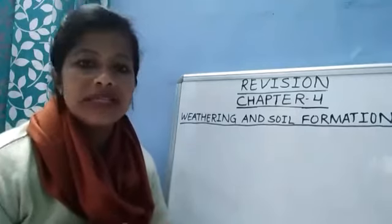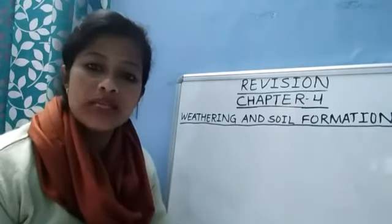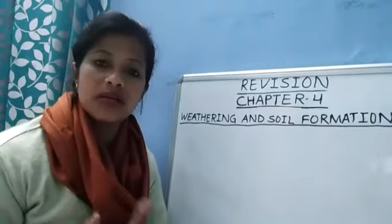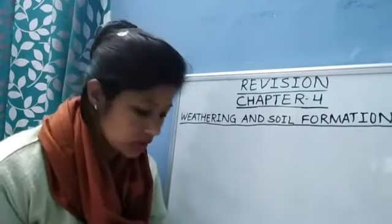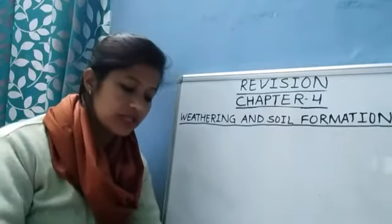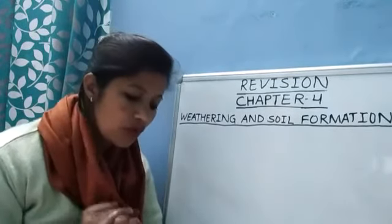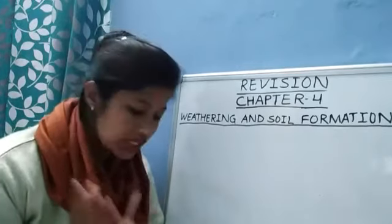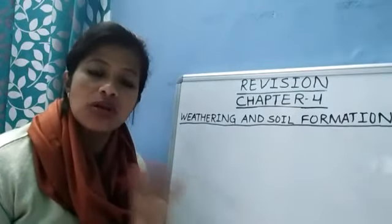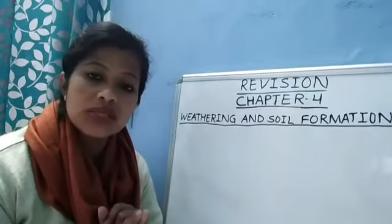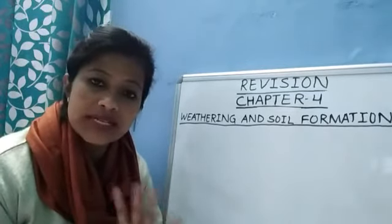Hello class 7, let's revise chapter number 4: Weathering and Soil Formation. The crust is formed by various types of rocks that differ from each other in composition, texture, and color. There are three types of rocks: igneous rocks or primary rocks, metamorphic rocks, and sedimentary rocks.